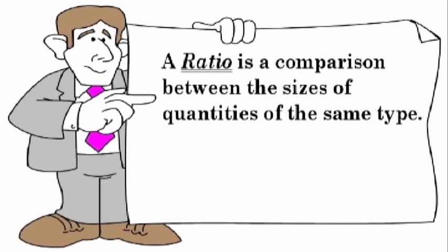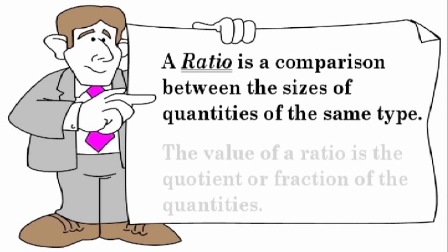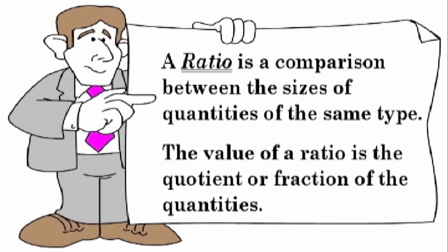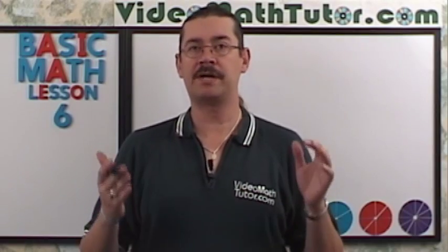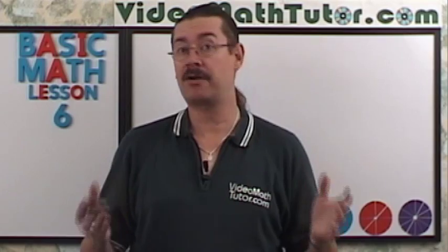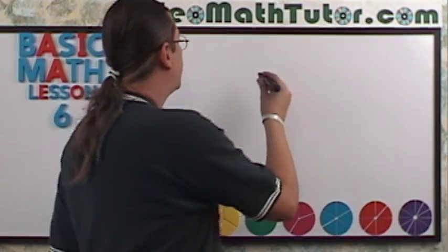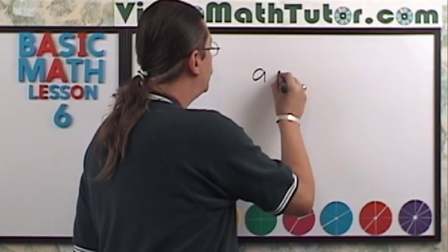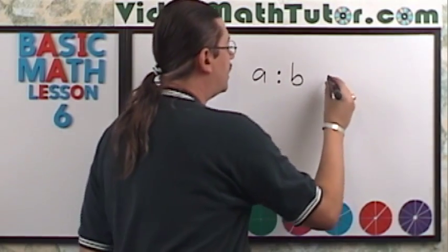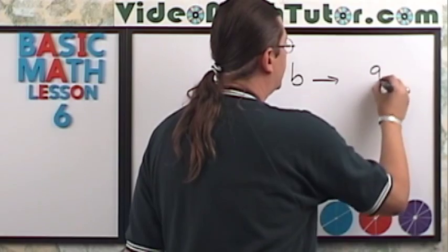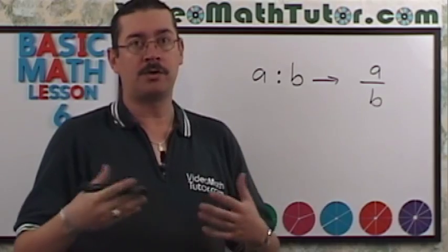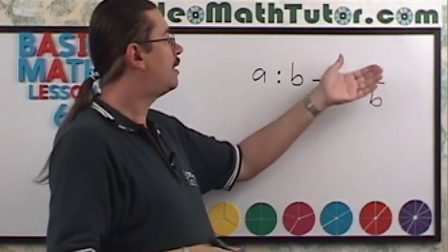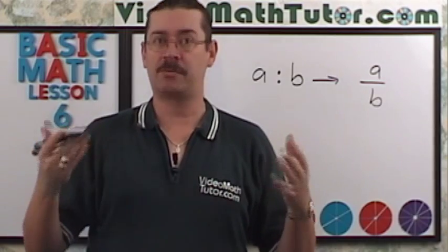A ratio is a comparison between the sizes of quantities of the same type. The value of a ratio is the quotient or fraction of the quantities. So if I want the ratio, let's say, of A to B, how can I represent that? Well, the way you do that is you say A to B. Or you can write it as a fraction, A to B. Now when you're saying ratios, you should use the word to. So I don't want to say A over B or A divided by B. I would say A to B because I'm referring to a ratio.